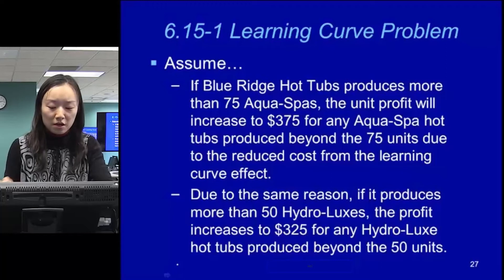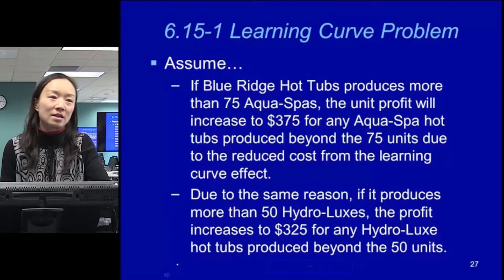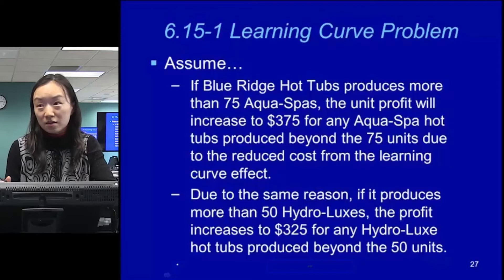This problem is built on another problem that we talk about in Chapter 3 — the Blue Ridge Hot Tub problem. They're trying to decide how many equal spots and hydrolysis to produce, given those resource constraints.